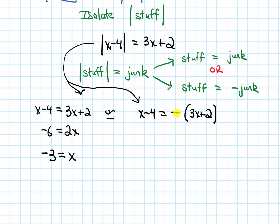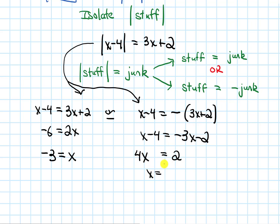For the other equation, let's distribute the negative: x minus 4 equals negative 3x minus 2. Moving negative 3x to the left gives 4x, and moving minus 4 to the right gives 2. Dividing by 4, we get x equals 2/4, which is 1/2.